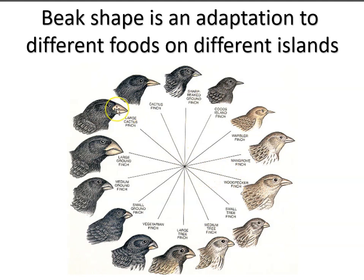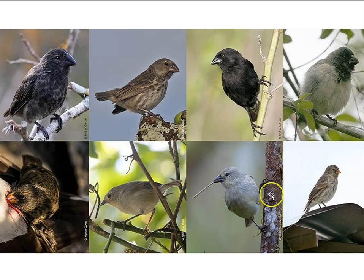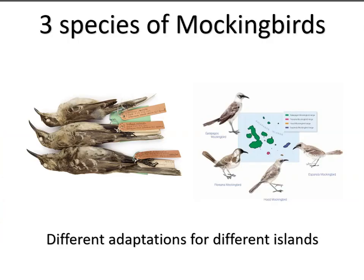Likewise with the finches: one species colonized the islands from South America, but as they spread to different islands they evolved different beaks to feed on different food items — small, narrow beaks to catch insects, larger ones to process seeds, and really big powerful beaks to crush hard nuts. There's even a vampire finch on one island that feeds on the blood of birds nesting there, and a species that uses little sticks as tools to dig larvae out of tree bark. The same reasoning applies to the mockingbirds: one species arrived and, as they spread to different islands and encountered different living conditions, they evolved into multiple species.